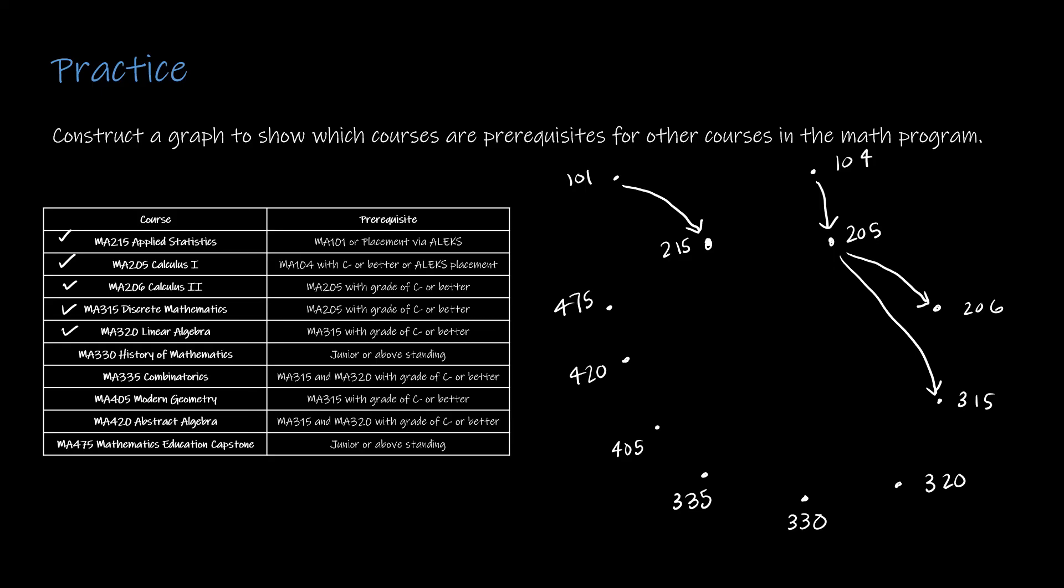To have 320, I need 315. To have 330, I need junior or above standing, so I don't need a node for that. 335 needs 315 and 320. 405 needs 315. 420 needs 315 and 320.